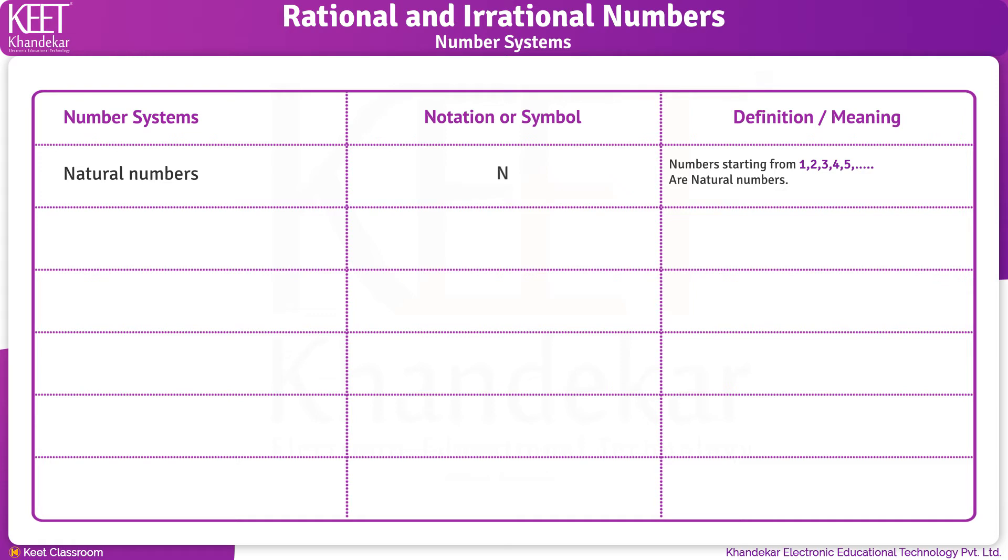The next number system is whole numbers, denoted by symbol W. Numbers starting from 0, 1, 2, 3, 4, 5 and so on up to infinity are whole numbers.